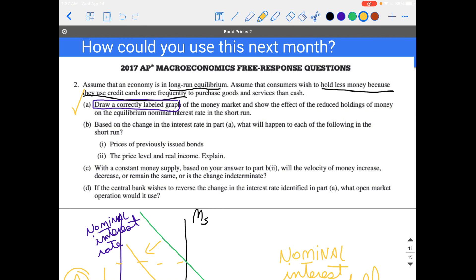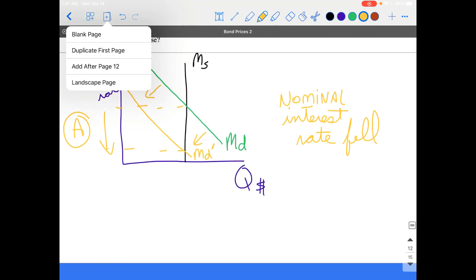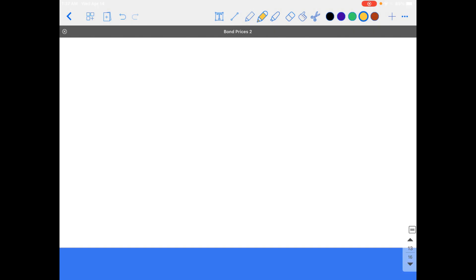Now we're asked, based on the change in the interest rate in Part A, the fact that it was falling, what will happen in each of the following in the short run: the price of previously issued bonds, and then the price level and real income.